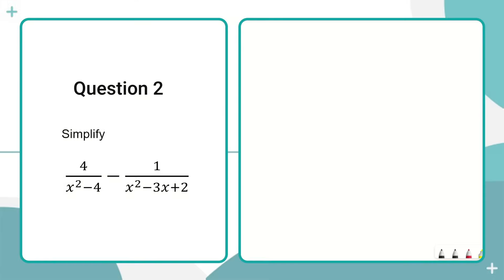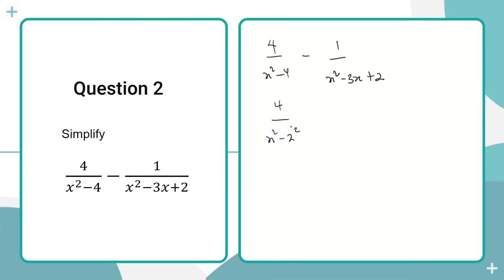So the expression given to us is 4 all over x squared minus 4, minus 1 all over x squared minus 3x plus 2. On the left side, we can rewrite it as 4 all over x squared minus 2 squared. Since we have a difference of two squares, we can write it as 4 all over (x minus 2)(x plus 2).